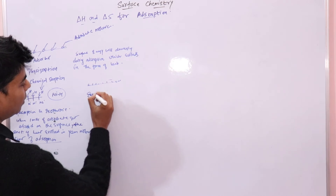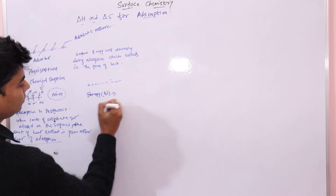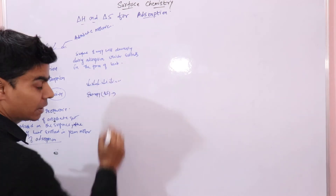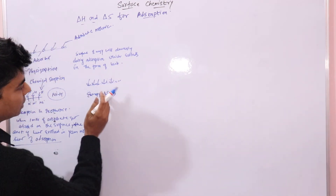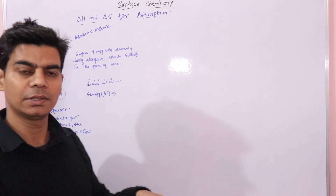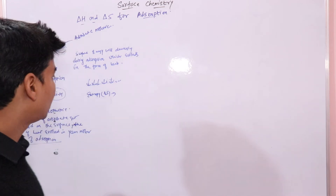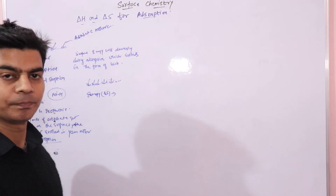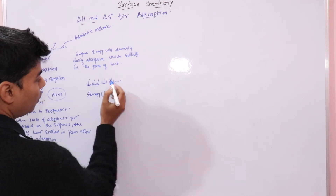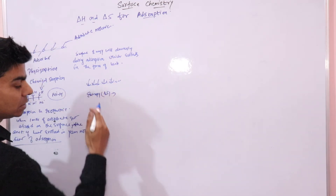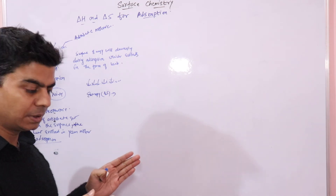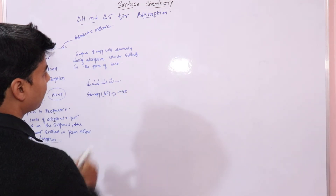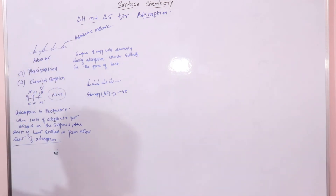Regarding entropy, since gas gets adsorbed on the surface due to attractive interactions, the gas molecules are now held on the surface and are unable to move freely. Therefore, the degree of randomness decreases, which means ΔS is negative.